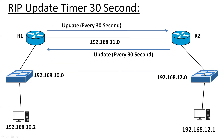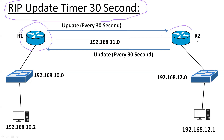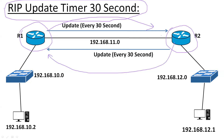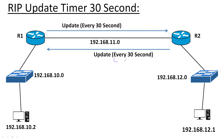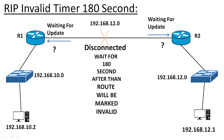Let's talk about the timers in RIP. The first is the update timer — every 30 seconds, the router exchanges update messages. After 30 seconds it forwards the update to the neighbor router again. If a link goes down, the invalid timer is automatically started and routers will wait for updates from the neighbor router for the next 180 seconds.